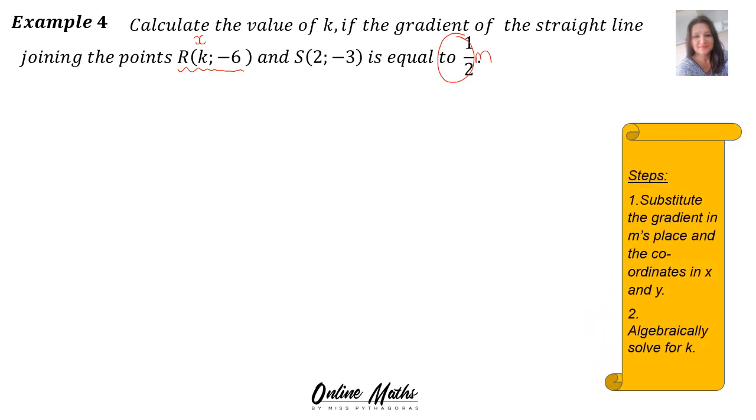There's your steps. So the first thing you're going to do is into the gradient formula you're going to substitute the given values. Again, there's your point R, k negative 6. So my advice to you is right there on top of your coordinate that this is x of r, this is y of r, this is x of s, this is y of s. And now we can substitute.